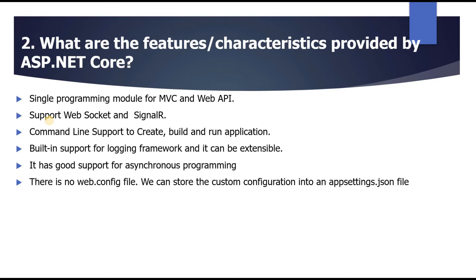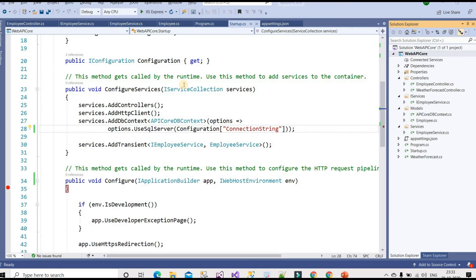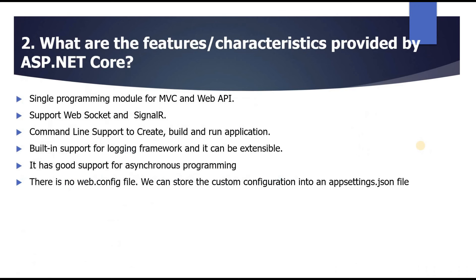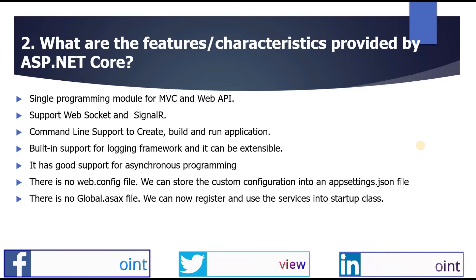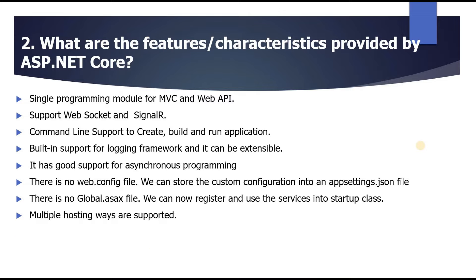ASP.NET Core has good support for asynchronous programming. There is no web.config file — custom configuration is stored in appsettings.json. There is also no global.asax file; instead, services are registered and used in the startup class.